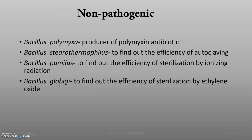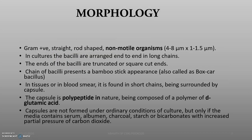Bacillus subtilis, or the hay bacillus, is the type species. Moving to morphology: they are gram positive, straight broad rod-shaped non-motile organisms. In cultures, Bacillus will be arranged in end-to-end long chains. At the ends, there will be truncated cut ends — that is the bamboo stick appearance or boxcar bacillus.